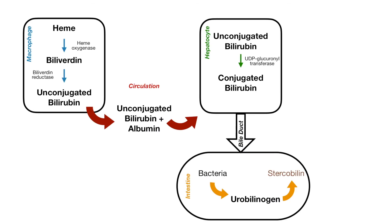This slide is going to discuss how bilirubin metabolism actually takes place. As I already mentioned, we start with heme, which is derived from your hemoglobin, and this gets converted to biliverdin by heme oxygenase. Biliverdin is then converted to unconjugated bilirubin by biliverdin reductase. Keep in mind that this breakdown is all taking place within the macrophage, through the reticuloendothelial system.